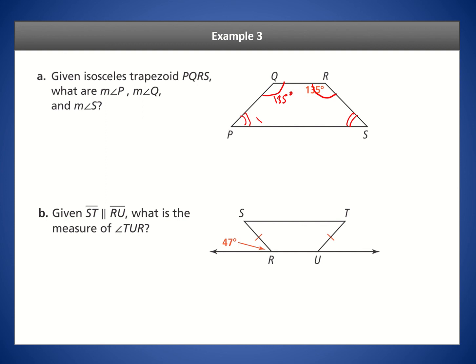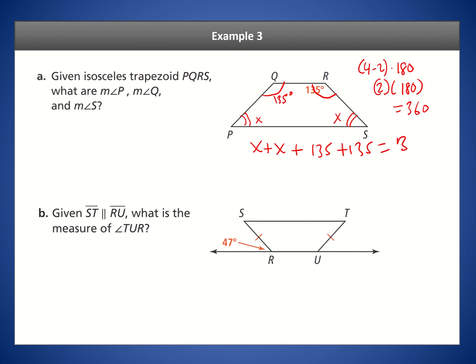Let's call angles P and S each X. The angles in a quadrilateral add up to 360 degrees, using the formula (4 − 2) × 180. So: X + X + 135 + 135 = 360, giving 2X + 270 = 360. Subtracting 270 from both sides: 2X = 90, so X = 45. Each of these angles is 45 degrees.